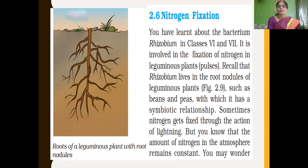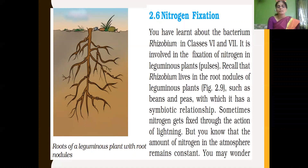Plants cannot utilize nitrogen directly from the atmosphere. So, rhizobium bacteria help in converting atmospheric nitrogen into nitrogen compounds and fix it in the soil. The rhizobium bacteria utilize nitrogen for their growth, and in the same way, the leguminous plant provides shelter for the rhizobium bacteria to live in their root nodules. So both organisms — the leguminous plant as well as the bacteria — benefit each other. This is what we call a symbiotic relationship.